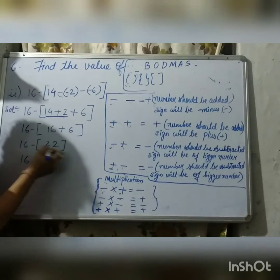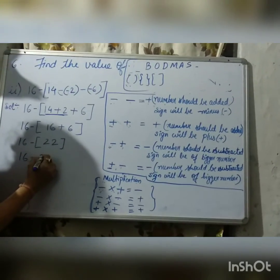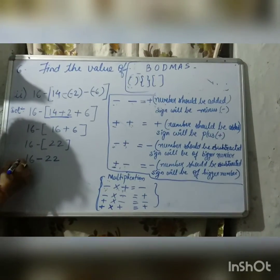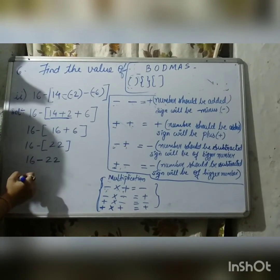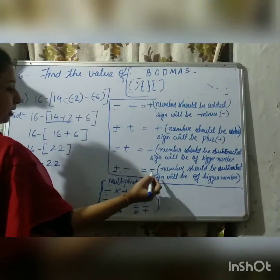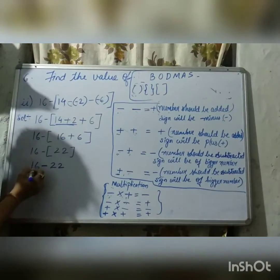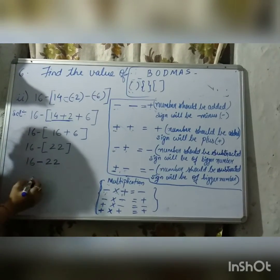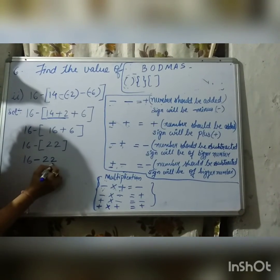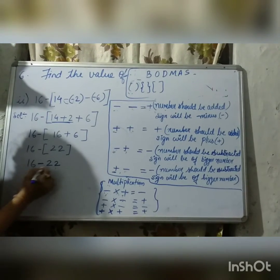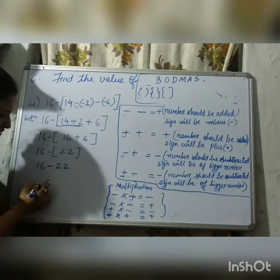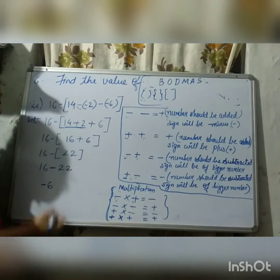Then we'll open the bracket. There's nothing to solve inside this bracket, so 22 will get the negative sign. Now, minus 22 and plus 16 — one is positive and one is negative. Which rule will be followed? If one is plus and one is minus, we do minus — numbers should be subtracted. So, we subtract 16 from 22: 22 minus 16 equals 6. The 6 will get the sign of the bigger numerical value — 22 is bigger and carries a minus sign — so 6 gets the minus sign. The answer is minus 6.